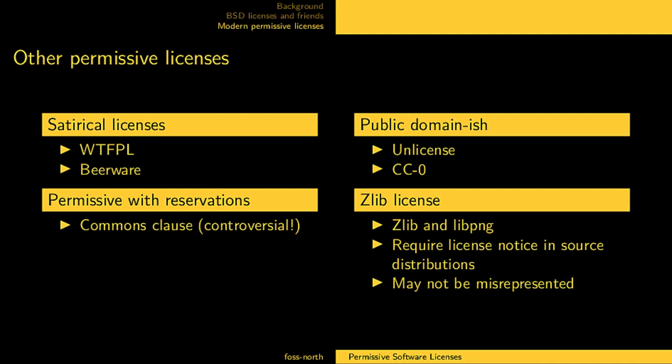Vim is a variant of this — it's charityware. It's free software but you are encouraged to donate money to the children of Uganda. Then there is the Unlicense, which is a license but tries its best to put things in the public domain. There's also Creative Commons Zero, which I'm not sure is recommended for software, but it can be used for other creative works in places where you don't have a public domain mechanism.